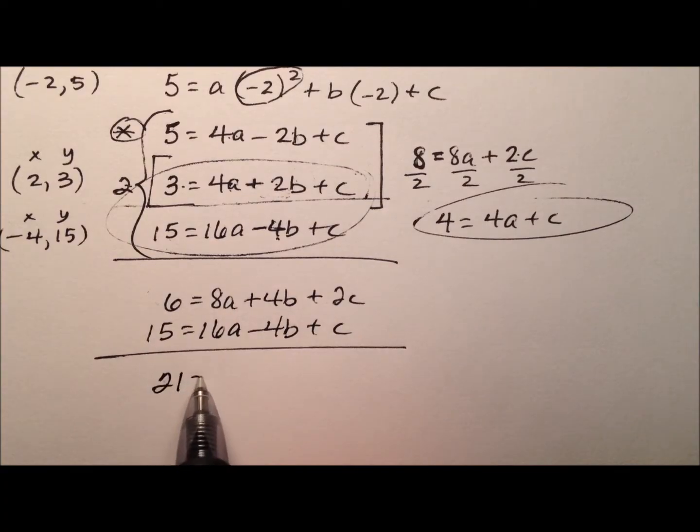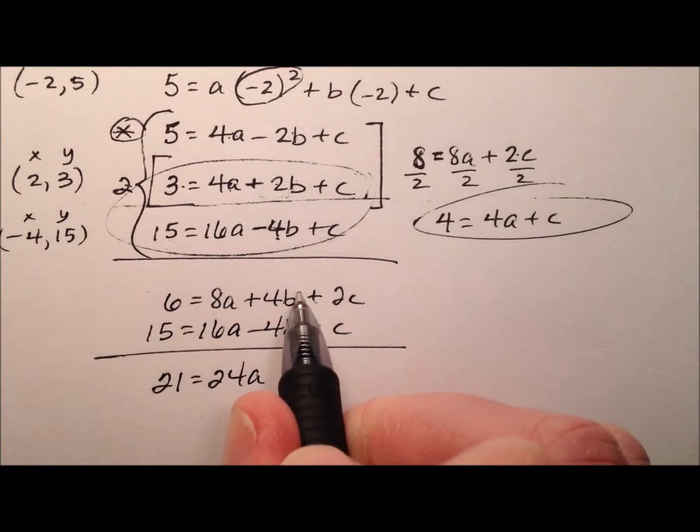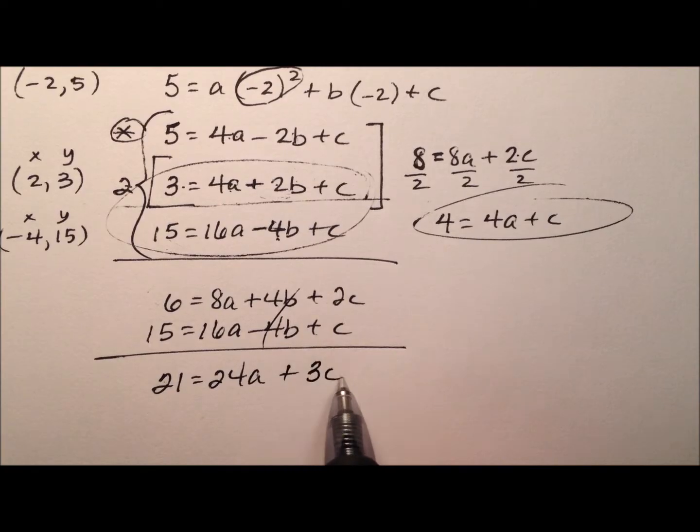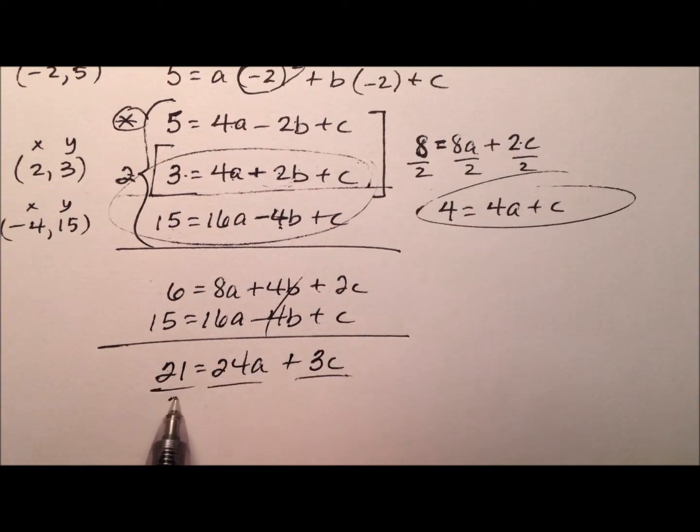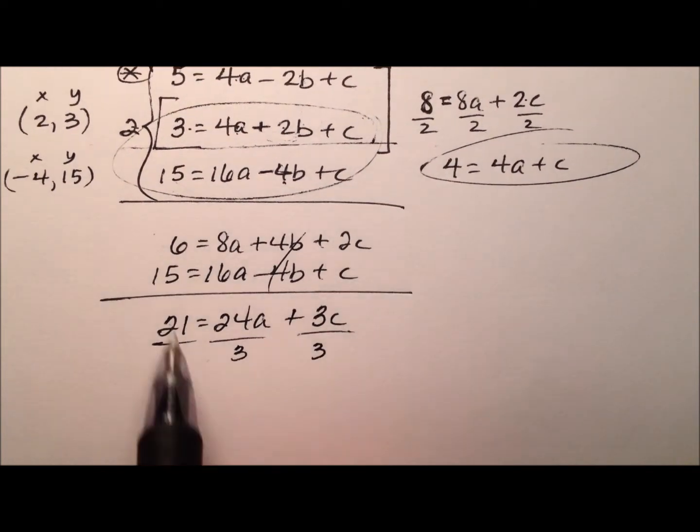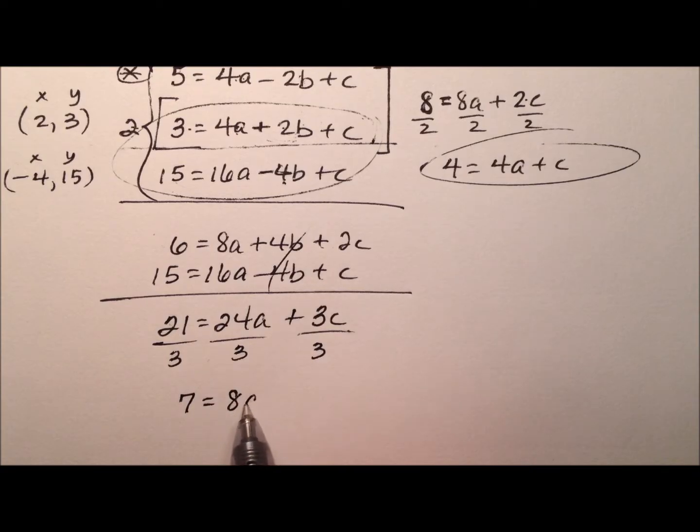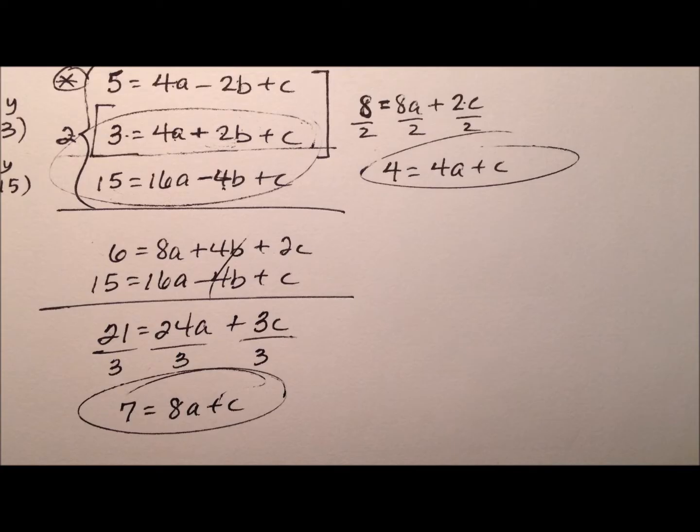So 21 equals 24a, these b's cancel, plus 3c. And you can notice all of these are divisible by 3, so let's divide. So 7 equals 8a plus c, and we have the second equation.